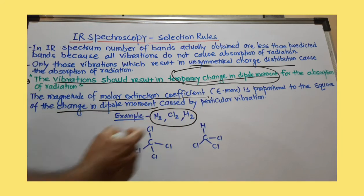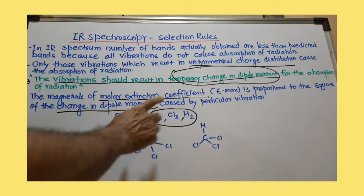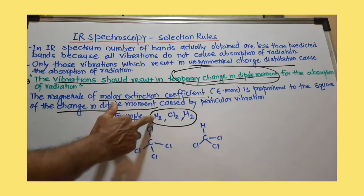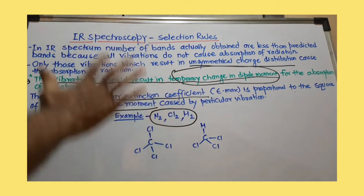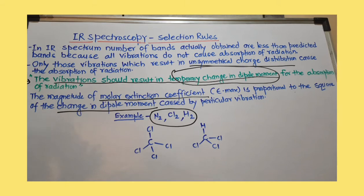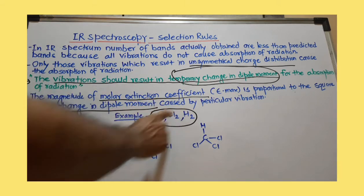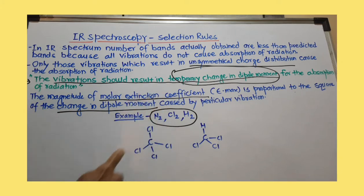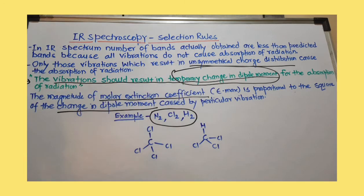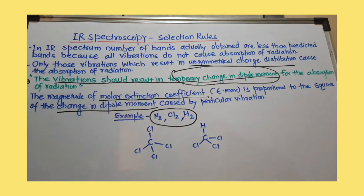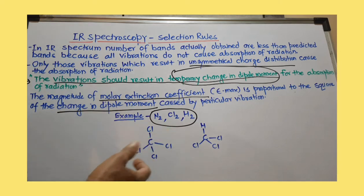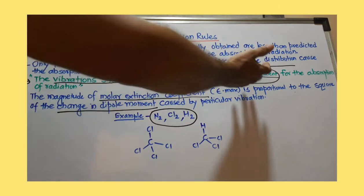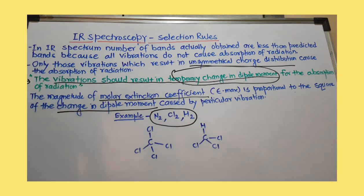Now let's discuss a few examples. These are homoatomic molecules — having similar atoms present. N₂, Cl₂, and a few more molecules like this are not actually IR active. So if you try to scan the IR spectrum for these molecules, you will not get any band. Why? Because of vibration in these molecules, there will be no change in dipole moment. These are symmetrical molecules having two similar atoms, so because of vibration, there will be no change in polarity, and hence the molecule is not IR active — it is not going to absorb IR radiation.